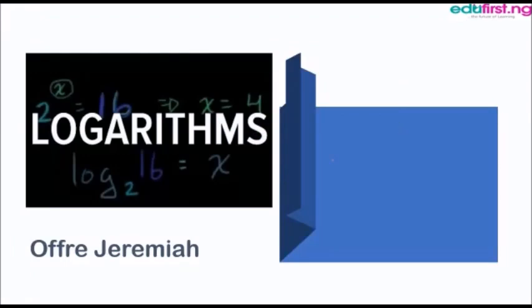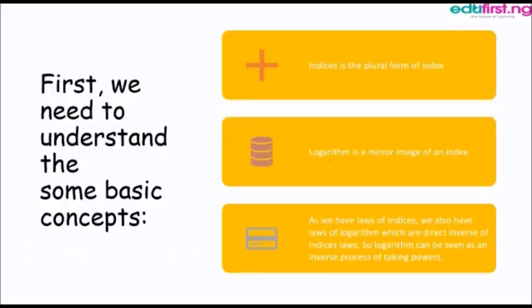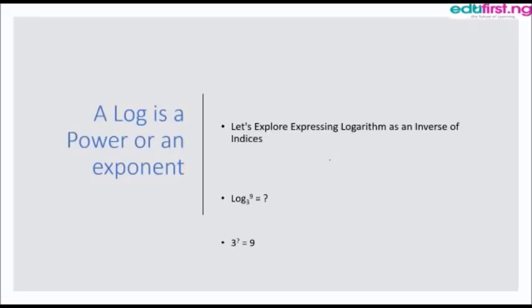Hello, my name is Ophir Jeremiah and today we'll be talking about expressing logarithm as an inverse of indices. First, we need to understand some basic concepts: indices is the plural form of index, and logarithm is the mirror image — or inverse — of an index. In a module, the laws of indices also have corresponding laws of logarithm, which are direct inverses. So a logarithm can be seen as an inverse process of taking a power.